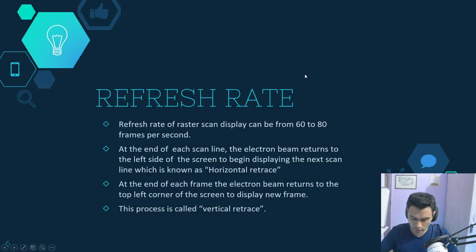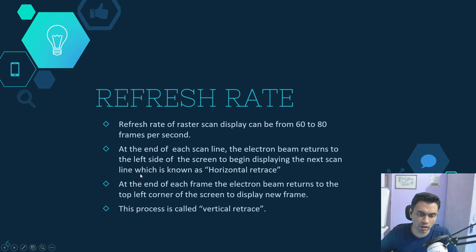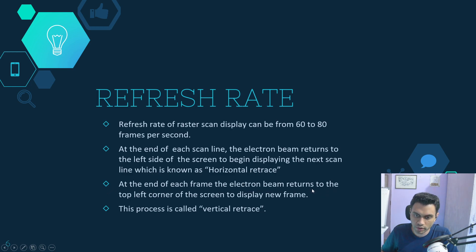The refresh rate of a raster system is around 60 to 80 frames per second. There are two important concepts: horizontal retrace and vertical retrace. At the end of each scan line, the electron beam returns to the left side of the screen to begin the next scan line — this is horizontal retrace. At the end of each frame, the electron beam returns to the top-left corner to display a new frame — this is vertical retrace.